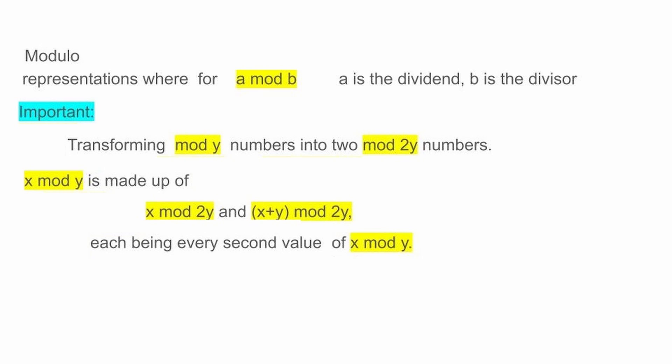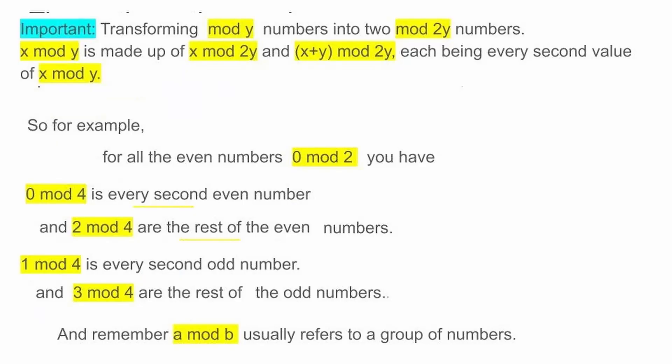What's important to understand about modulo use is how to transform mod y numbers into mod 2y numbers. For example, x mod y is made up of x mod 2y and x plus y mod 2y, each being every second value of x mod y. So for the even numbers, which are 0 mod 2, you have 0 mod 4 as every second even number, and 2 mod 4 as the rest. Similarly, 1 mod 4 is every second odd number, and 3 mod 4 are the rest. A mod B usually refers to a group of numbers, not a single number.